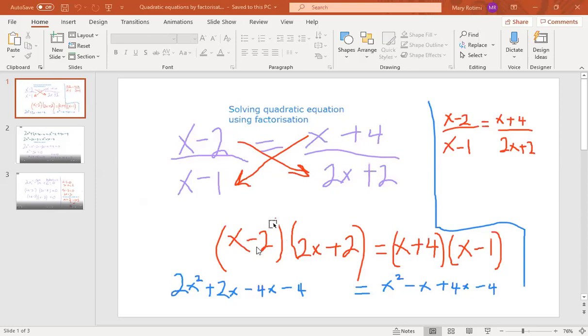So the next thing we have to do is expand this bracket. That's the right vocabulary to use. If we expand this bracket by doing x times 2x we get 2x². x times 2 we get +2x. And then if you do -2 times 2x you're going to get -4x. And if you do -2 times +2 you get -4.